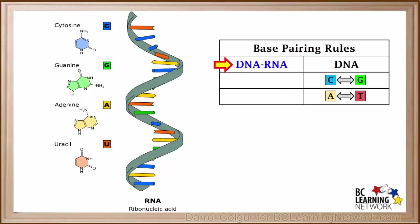However bases on RNA do pair with bases on a nearby DNA molecule, as we'll see. RNA has both cytosine and guanine. So a cytosine on DNA will pair with a guanine on RNA. Also a guanine on RNA will pair with a cytosine on DNA.